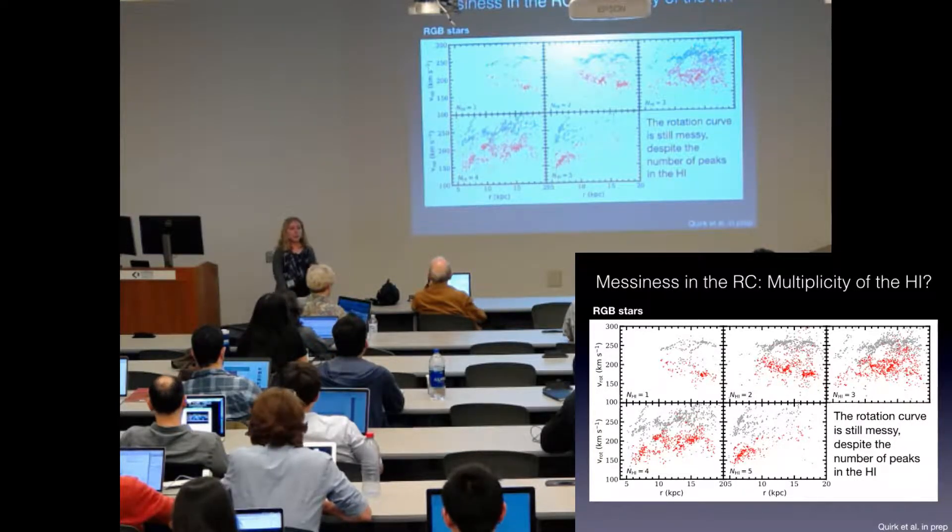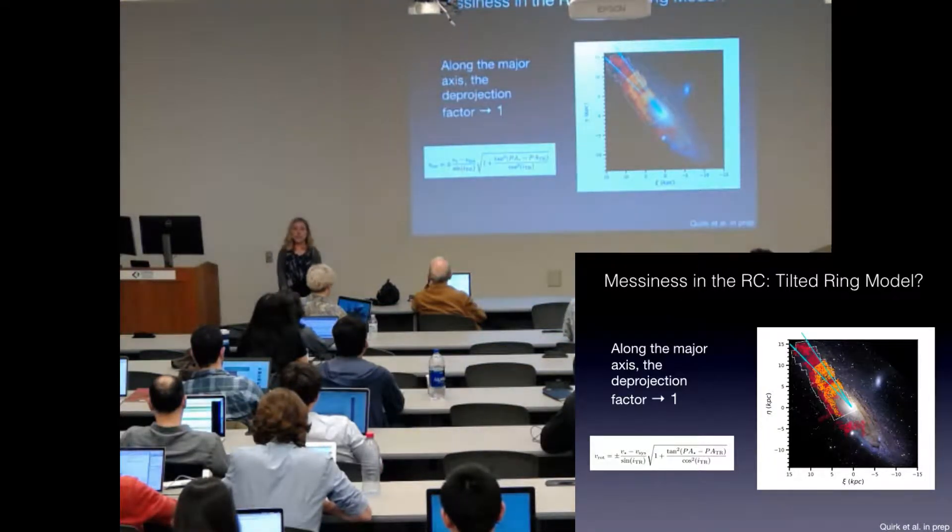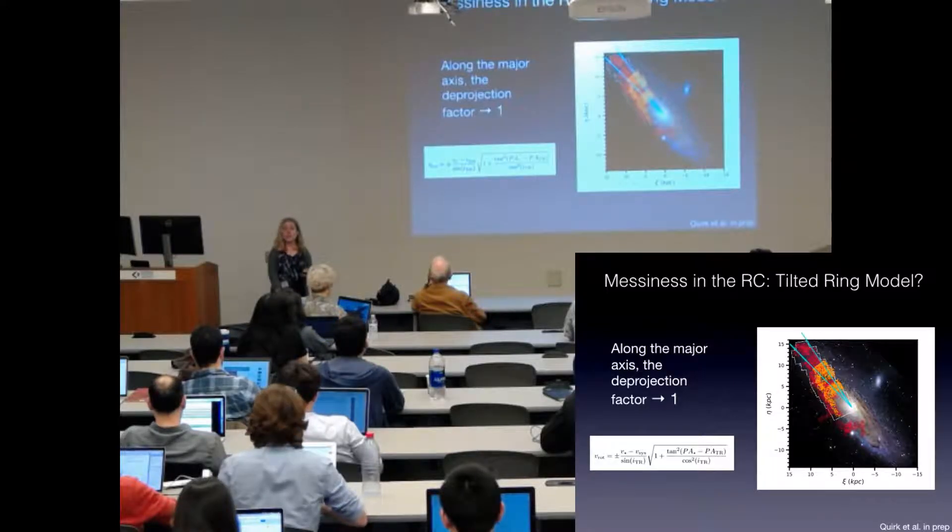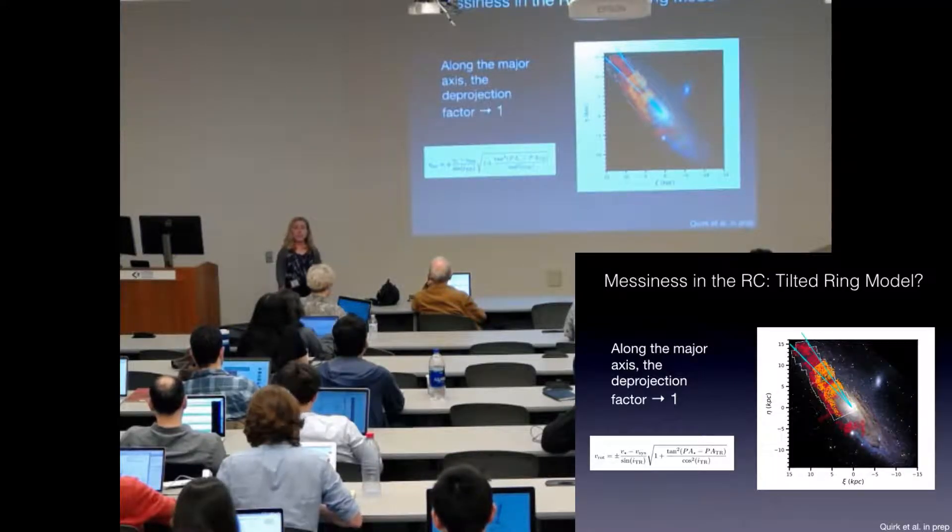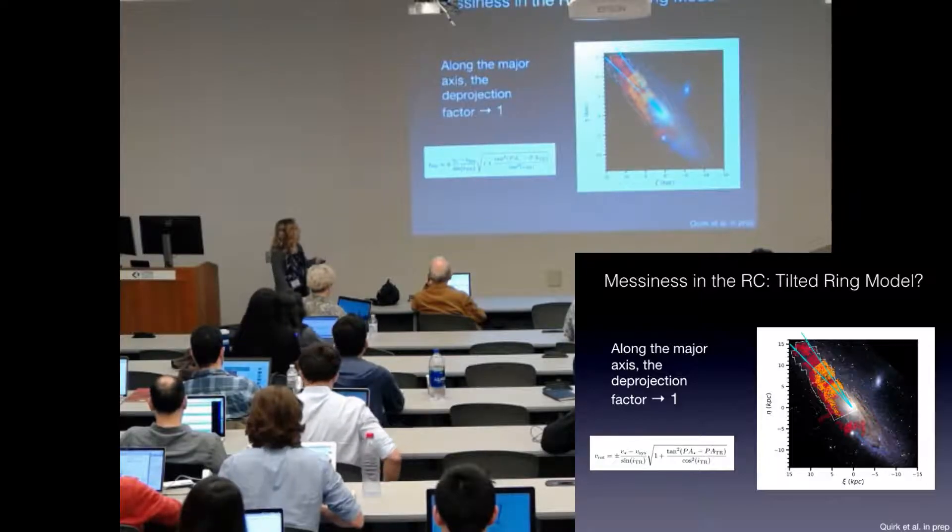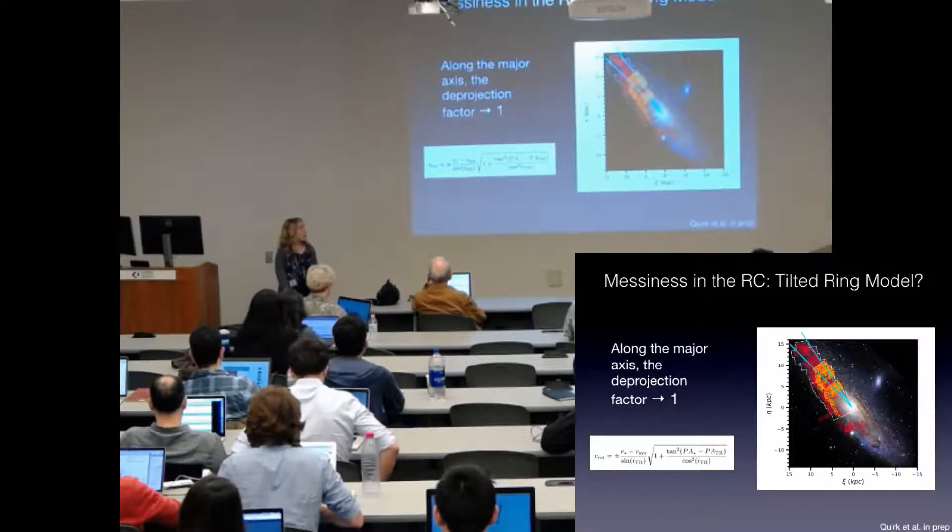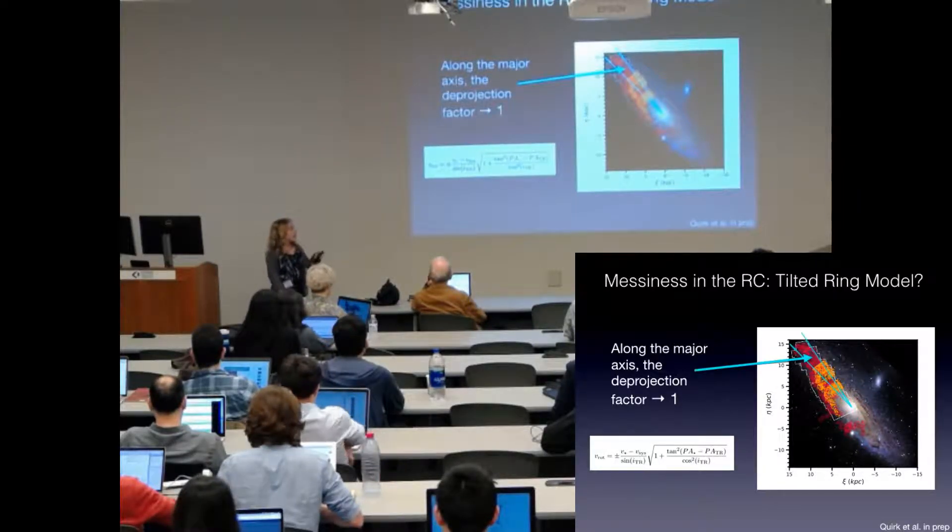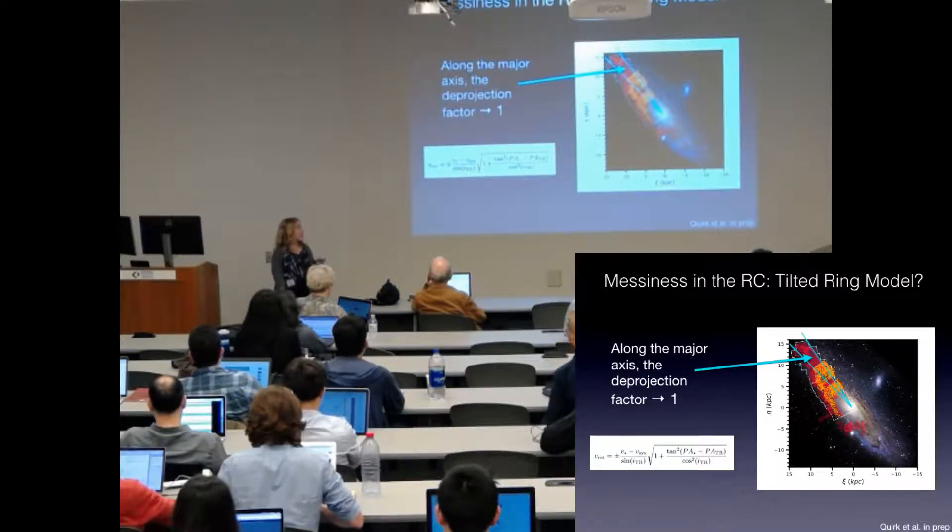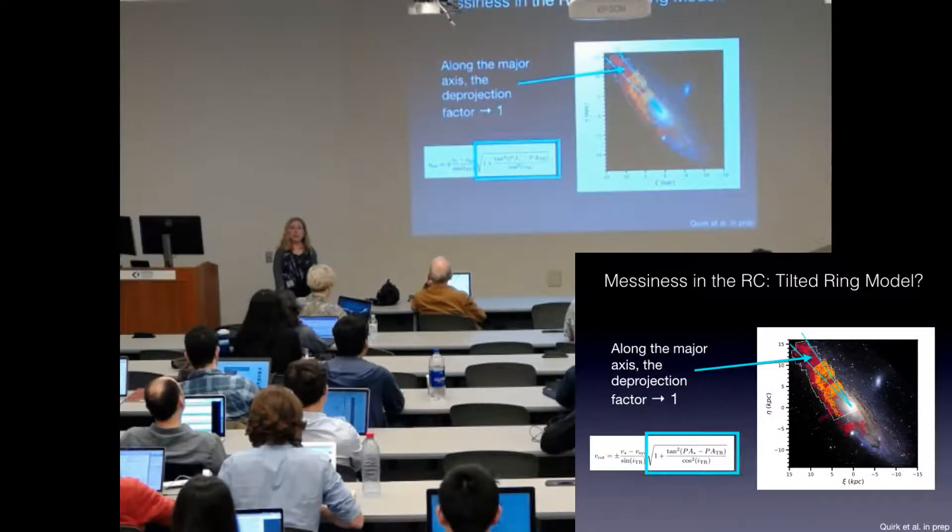The second possible source of scatter or substructure in the rotation curves is the model that I use to deproject the line of sight velocity into rotation velocity. So again, that's the tilted ring model. This model is well behaved along the major axis, which is this region shown in the wedge here. And the deprojection factor approaches a minimum of one.